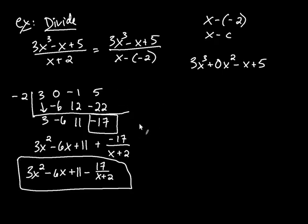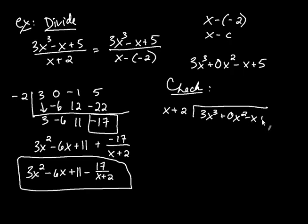And one thing you can do is you can actually perform this division using long division. So you could say, as a check on your work, let me go ahead and take x plus 2 and divide it into the 3x cubed. So 3x cubed plus 0x squared minus x plus 5.